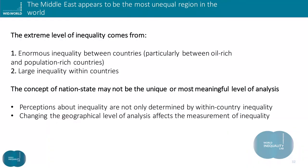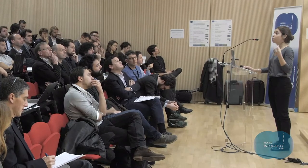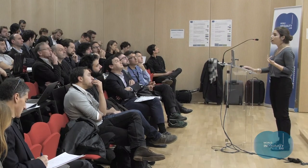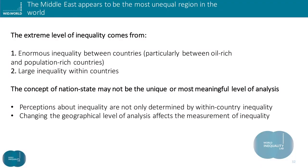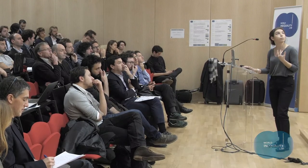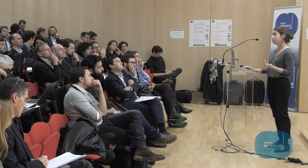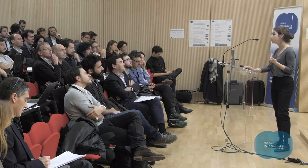In this chapter of the report, we try to answer this puzzle in two ways. First, we correct upward existing estimates using fiscal data, and we find that the Middle East seems to be the world's most unequal region. This is due to both enormous inequality between countries — in particular between oil-rich countries and population-rich countries — but also to large inequality within countries. The second way we tackle this puzzle is by changing the level of analysis and studying inequality at the regional level. The point is that there is a need to go beyond the concept of nation-states to study inequality and to gain further insight into international inequality patterns.